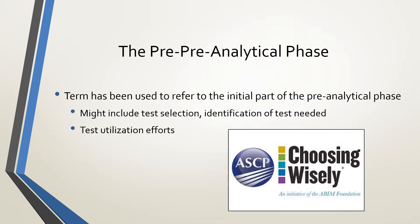Some people refer to the initial part of the pre-analytical phase as the pre-pre-analytical phase. This term generally refers to everything before specimen collection — test selection and ordering, identification of tests needed, and entering test requisitions. On the subject of test utilization, ASCP has been involved in an initiative called 'Choosing Wisely,' which works to educate providers about lab tests and how to choose the best one for their situation.